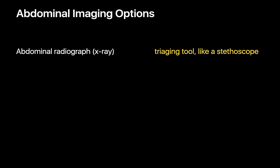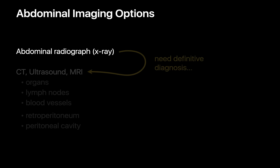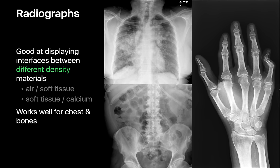When it comes to imaging options for the abdomen, I think of abdominal x-rays as a triage tool — kind of like a stethoscope — and other modalities like CT, ultrasound, and MRI as diagnostic tools that can provide a much more specific diagnosis. Radiographs work best for showing interfaces between materials of very different density, like air and soft tissue, or soft tissue and calcium. That's why radiographs are helpful for lungs and skeletal disorders.